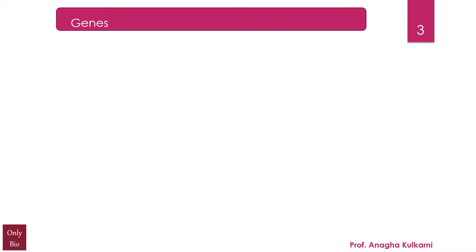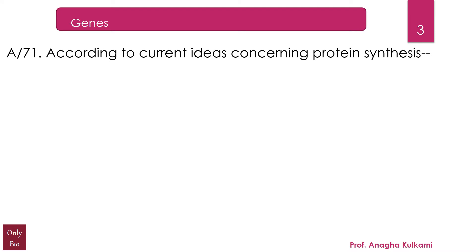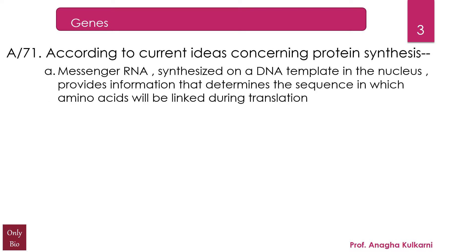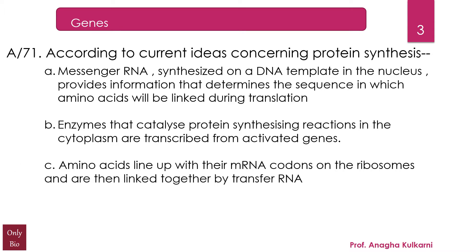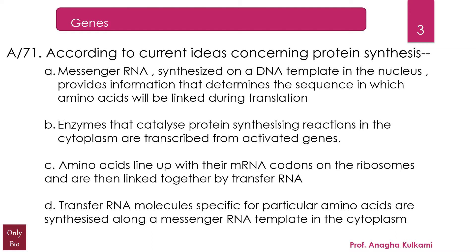The first question relates with the chapter genes. According to current ideas concerning protein synthesis, the options are: A. Messenger RNA synthesized on a DNA template in the nucleus provides information that determines the sequence in which amino acids will be linked during translation. B. Enzymes that catalyze protein synthesizing reactions in the cytoplasm are transcribed from activated genes. C. Amino acids line up with their mRNA codons on the ribosomes and are then linked together by transfer RNA. And D. Transfer RNA molecules specific for particular amino acids are synthesized along a messenger RNA template in the cytoplasm.